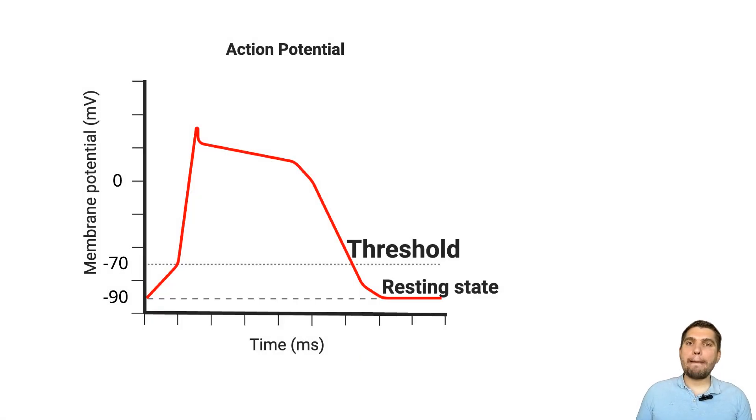Before we jump into hyperkalemia, let's quickly refresh how a normal action potential works in cardiac cells. It all starts at resting membrane potential. Resting membrane potential is the baseline electrical charge difference across the cardiomyocyte membrane, typically about minus 90 millivolts. It is maintained mainly by potassium ions.